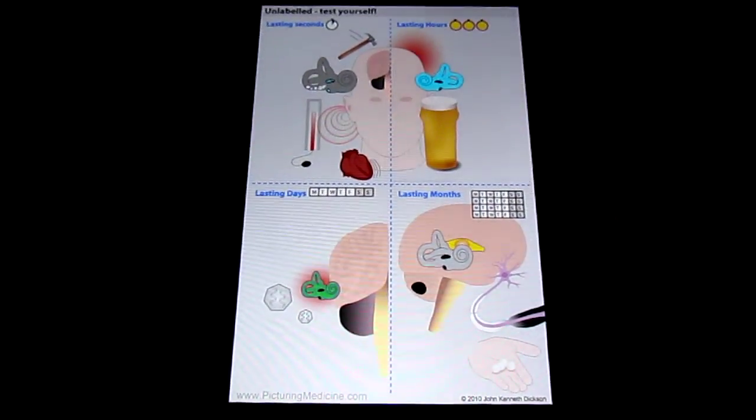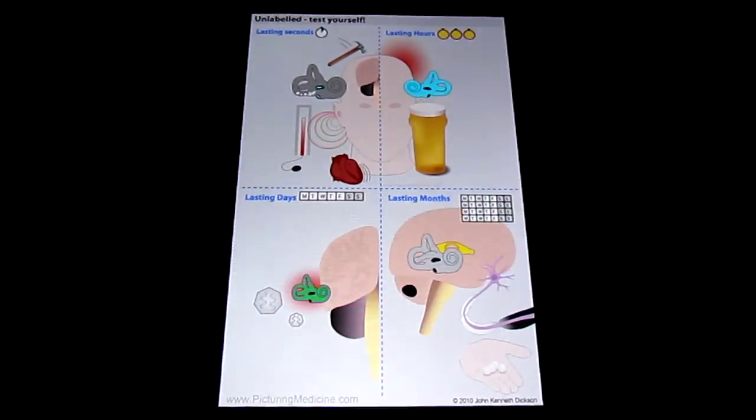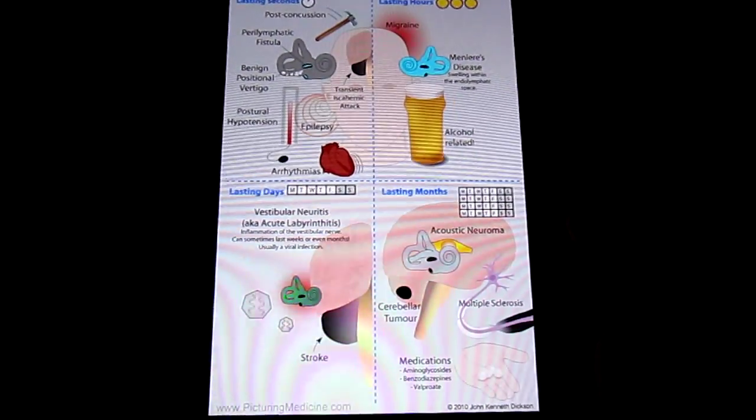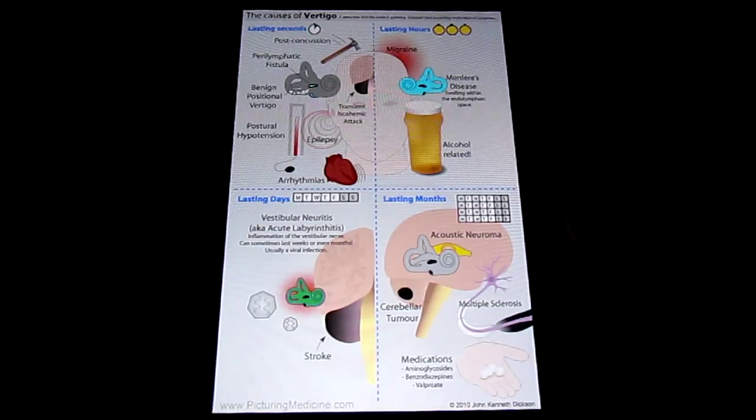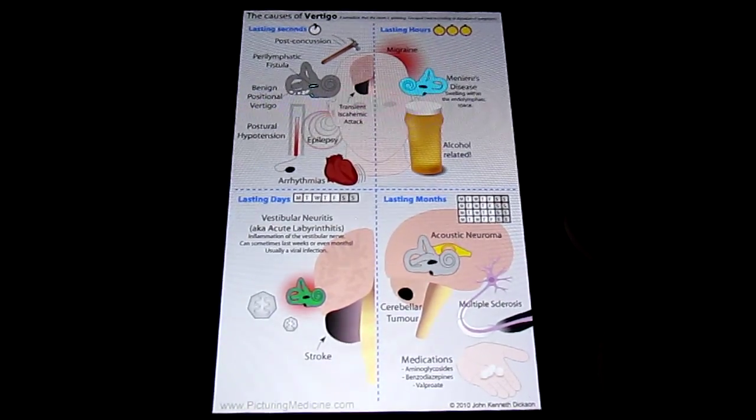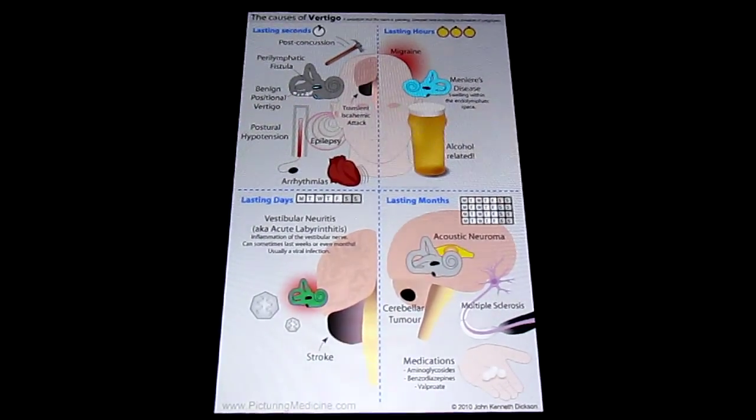So that diagram summarizes for you all the potential causes in a relatively logical fashion, and I hope you can draw on these visual cues to help you remember all the causes. And of course, as with all the Picturing Medicine diagrams, you can view them with labels to remind yourself of what these different visual cues mean.